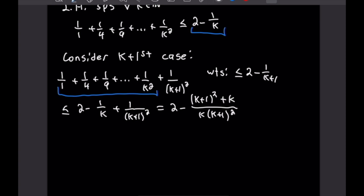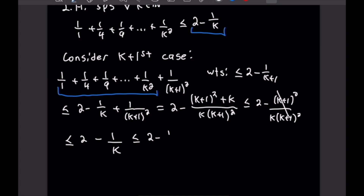Combining the k terms over a common denominator gives 2 minus the quantity k plus 1 squared minus k all over k times k plus 1 squared. Since this fraction is negative we can make something larger by reducing it, giving us 2 minus k plus 1 squared over k times k plus 1 squared. The k plus 1 squared terms cancel, leaving 2 minus 1 over k, which is of course less than or equal to 2 minus 1 over k plus 1. Looking at the extreme left and right sides, we have proved the sum is less than or equal to 2 minus 1 over k plus 1.